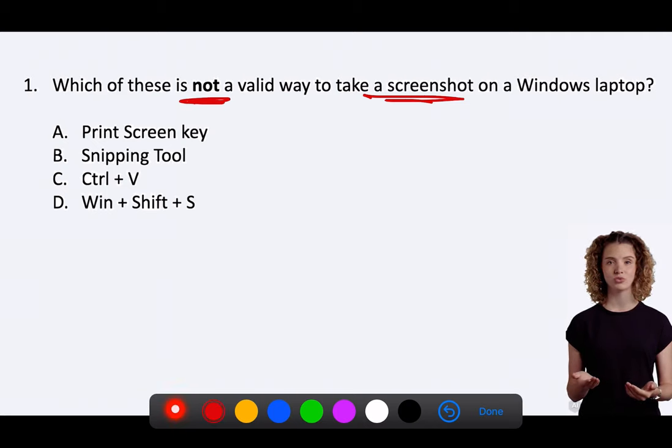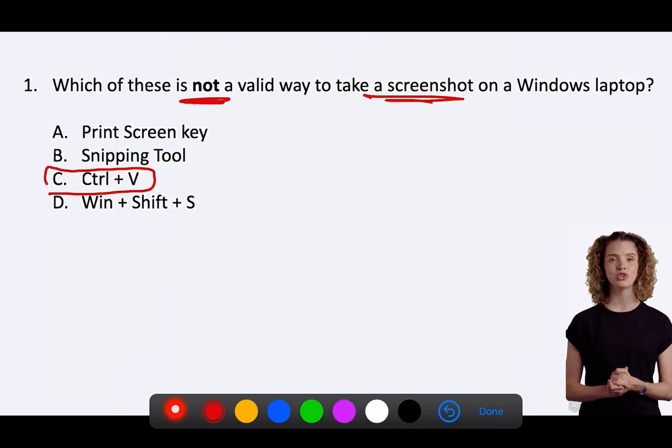The answer is C. Ctrl Plus V is not a valid way to take a screenshot on a Windows laptop. Ctrl Plus V is the keyboard shortcut for pasting content from the clipboard into an application, not for taking a screenshot.